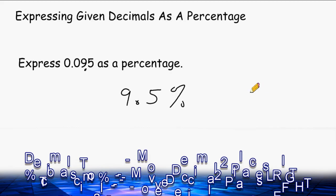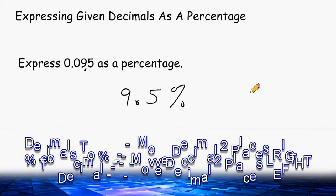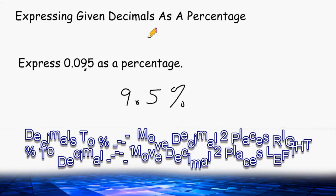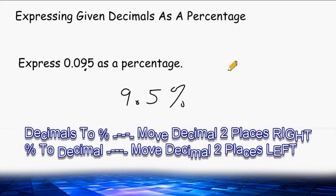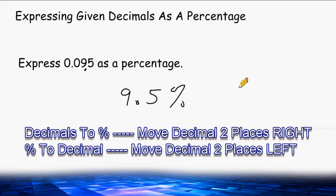To summarize: when changing decimals into percentages, simply take the decimal point and move it two place values to the right. When changing percentages into decimals, take the decimal point and move it two spaces to the left.